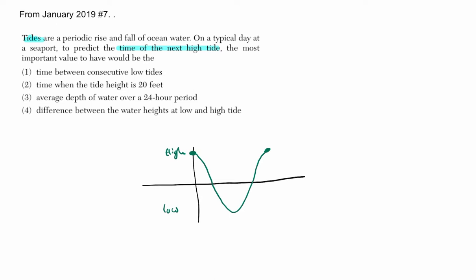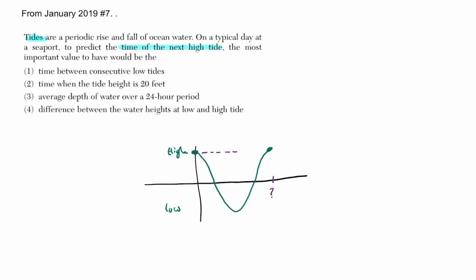Well, if I want to know when the next high tide is going to be, if I know it's periodic, that means it's repeating every so often. There's going to be some time value. If I know how long it takes to get from one high to the other, that will always happen. That's the definition of periodic, right?